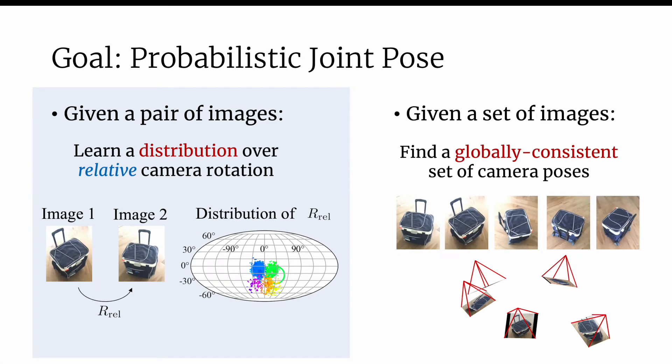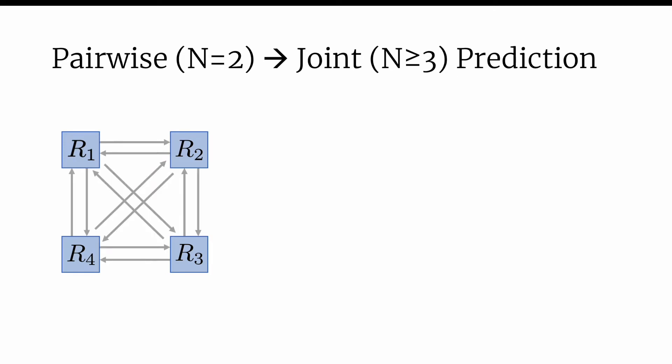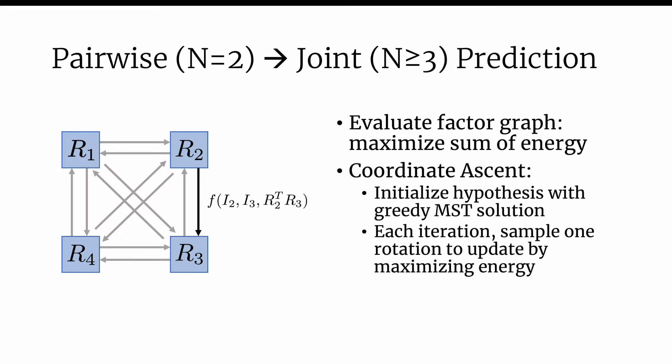Now that we have a mechanism for predicting relative rotation between two images, we wish to recover n rotations given n images. Given n different images each associated with a rotation, we can construct a factor graph where the energy of each edge can be computed using our pairwise predictor. We wish to maximize the total energy of the factor graph. Since it's difficult to compute the maximum analytically, we choose to optimize the rotations iteratively using block coordinate ascent. We initialize the rotations by constructing a maximum spanning tree that greedily selects the edges with the highest probability.